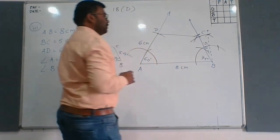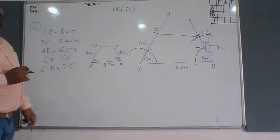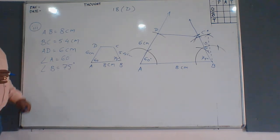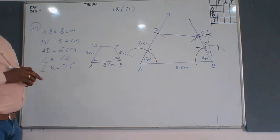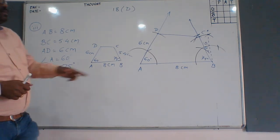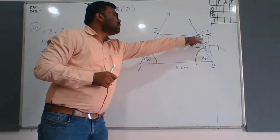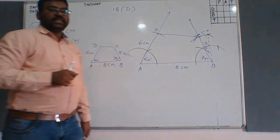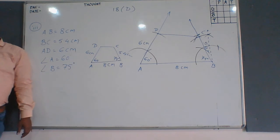Join DC. Our construction is done — quadrilateral ABCD is completed. Okay students, we will stop here today.